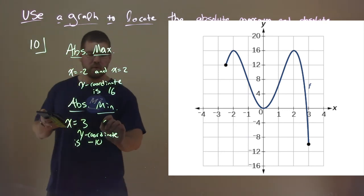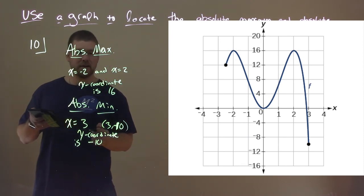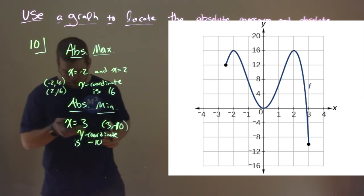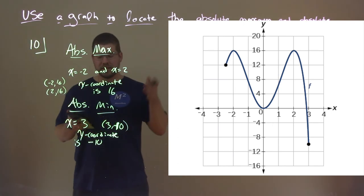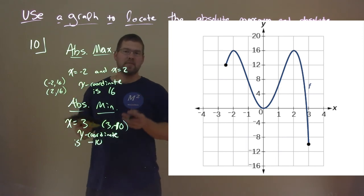So, if you want to say a point is 3, negative 10. Right there. 3, negative 10. And the 2 x values are negative 2, 16, and positive 2, 16 here as well. So, there we can see our absolute minimum at negative 10. Right there.